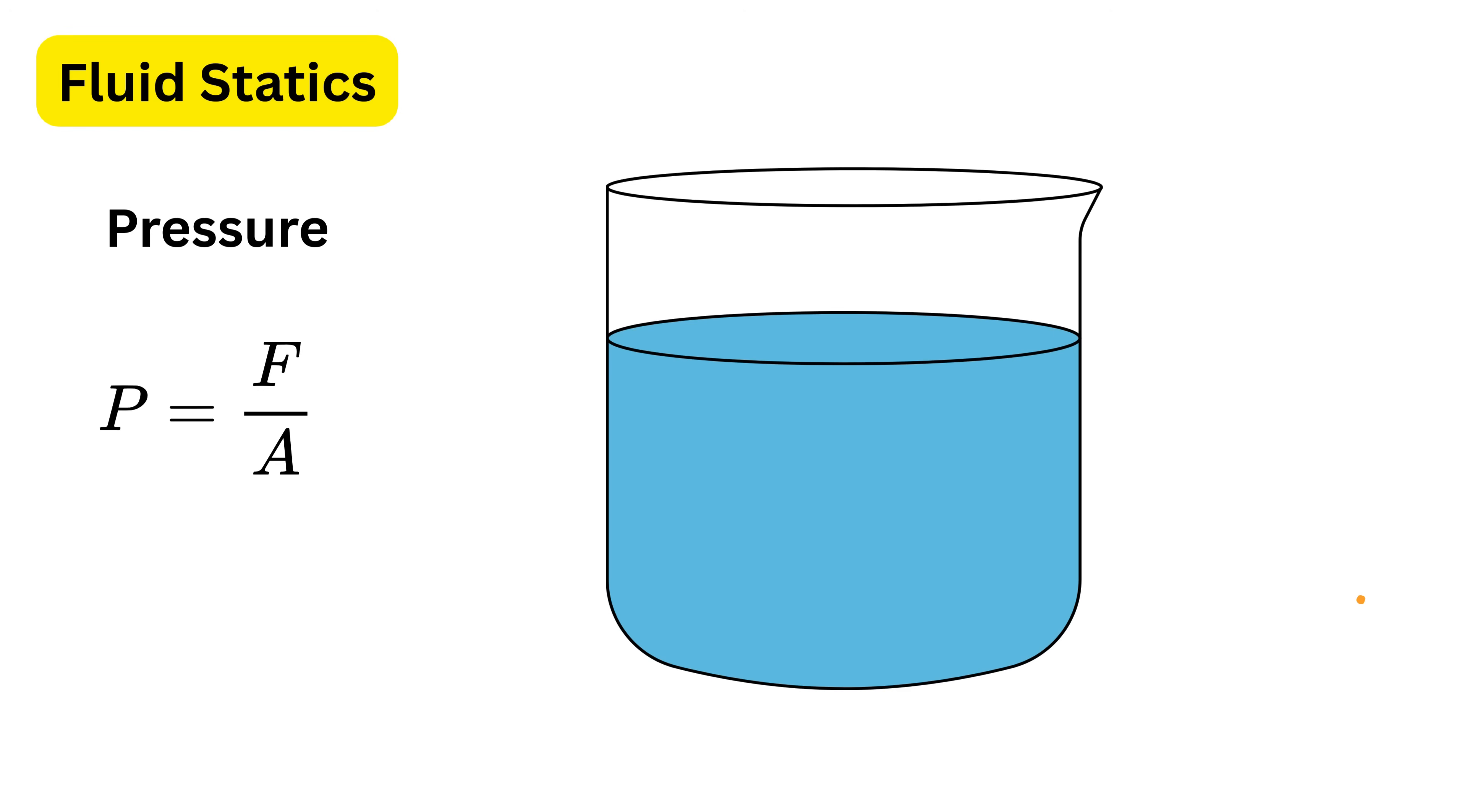Let us now talk about how pressure exists at a point inside a fluid. Pick any tiny point inside a fluid that is completely at rest. Pressure at that point is the same in all directions. This property is called isotropy of pressure, which simply means pressure has the same value in all directions at a point.